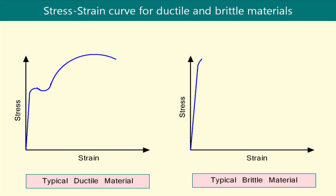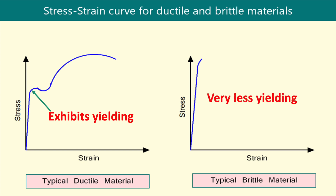Now let us discuss salient features of the stress strain diagram for ductile and brittle materials. A ductile material always exhibits yielding for a large extent and changes its shape to accommodate straining. Whereas for brittle materials, there is almost no yielding or very little yielding, and the material will fail after reaching its ultimate stress capacity.